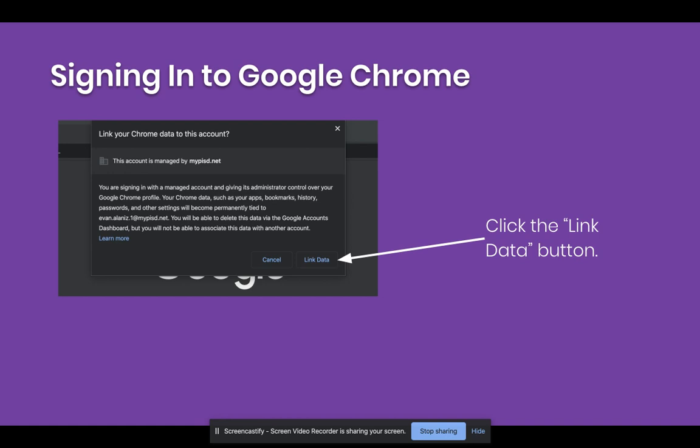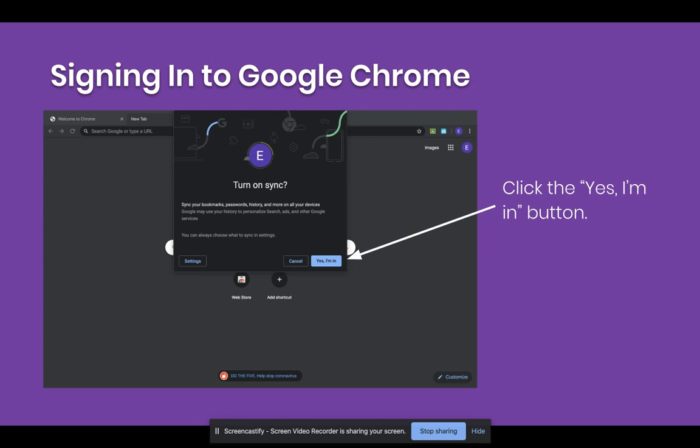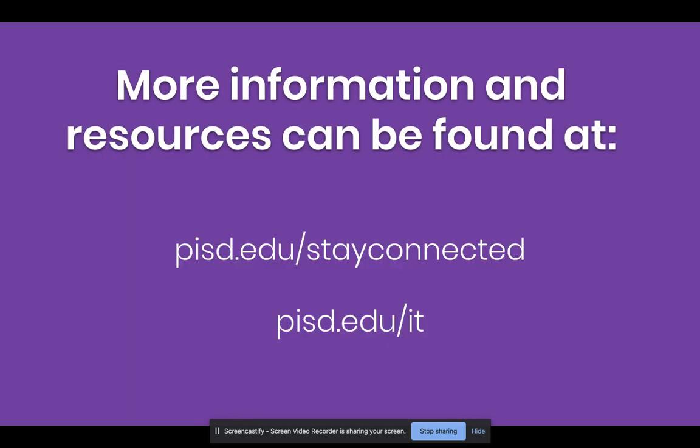Once you're signed into Chrome, you'll be asked if you'd like to link your Chrome data. Click the button that says link data. Finally, you'll get a screen to turn on sync and you will click the button that says yes, I'm in. And that's it — you're signed into Google Chrome. For more information and resources, please visit PISD.edu/stay-connected or PISD.edu/IT.